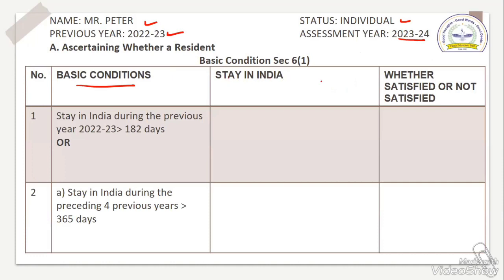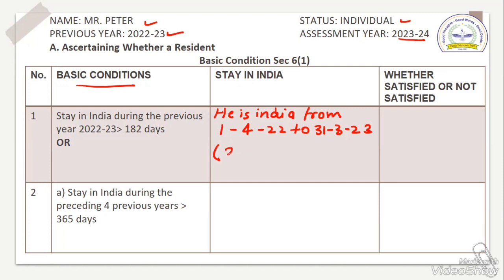Stay in India during the previous year 22-23 for 182 days: he is in India from 1/4/22 to 31/3/23. He was there for 31 days in January, 28 days in February, and 31 days in March — totaling 90 days. We want 182 days, but he has only 90 days. It means Mr. Peter is not satisfying the first condition.